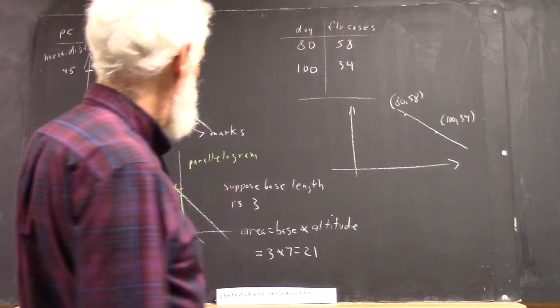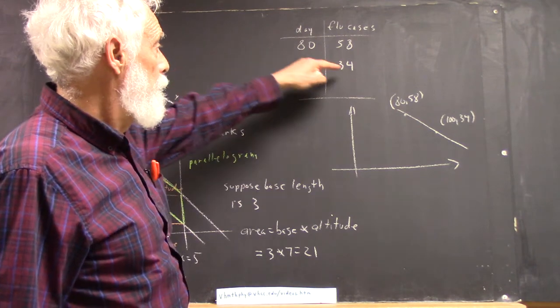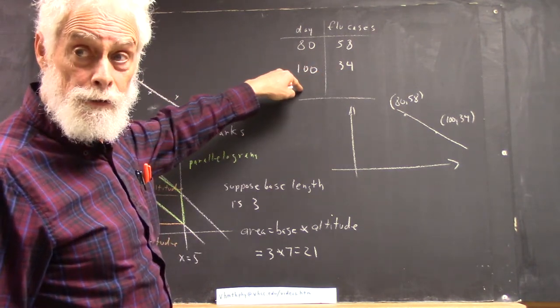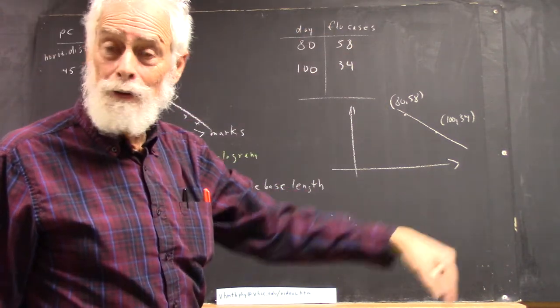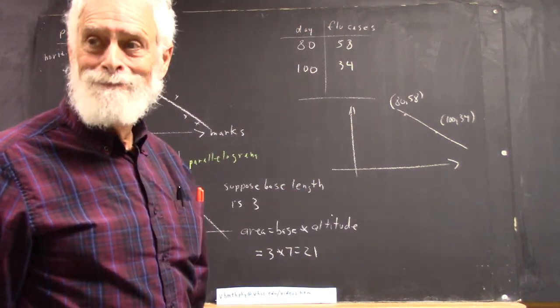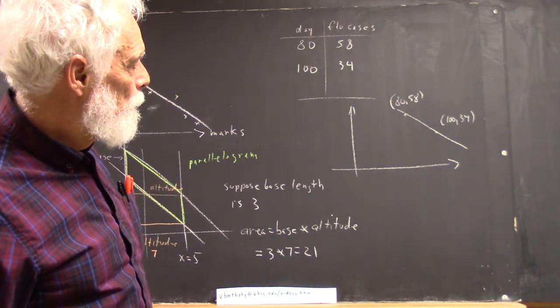Okay, so briefly, we have a situation where we have 58 flu cases on day 80, 34 flu cases on day 100. This is good because the number of flu cases is going down, right? None of us wants the flu. Some of us might have had it, but everybody's alive.